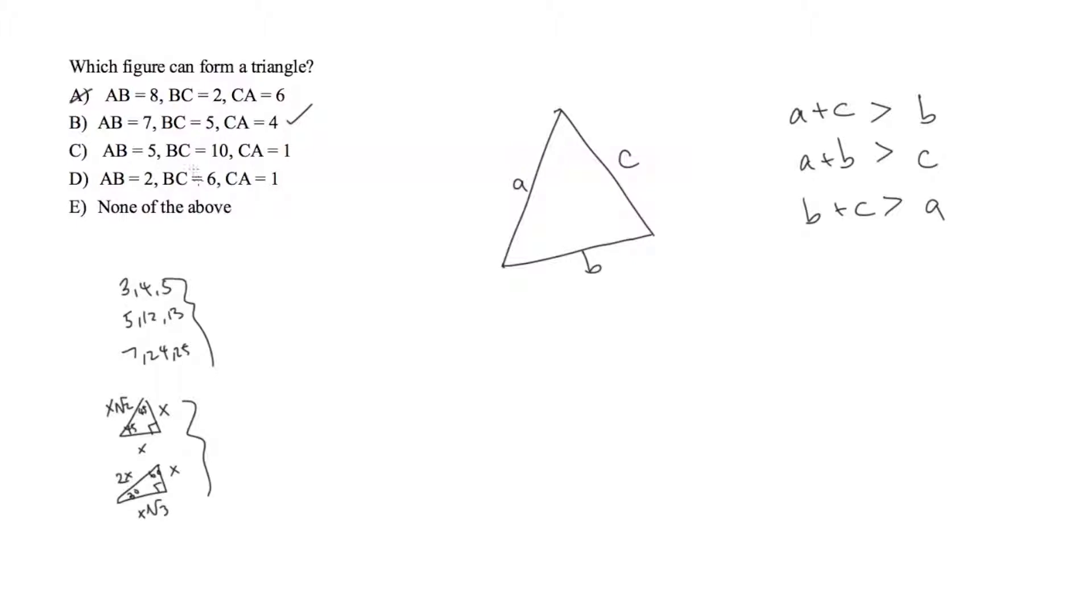So that's good for now. We have 5 plus 10 definitely greater than 1. We have 10 plus 1 definitely greater than 5 and we have 1 plus 5 in this case it's not greater than 10. So c is out.